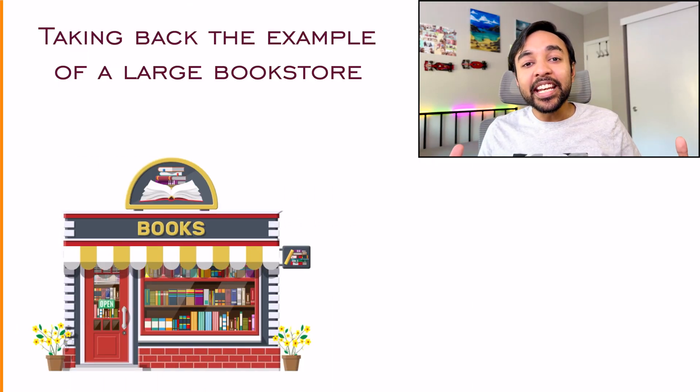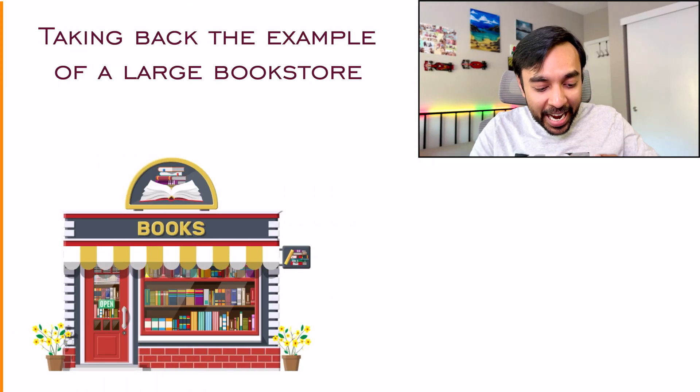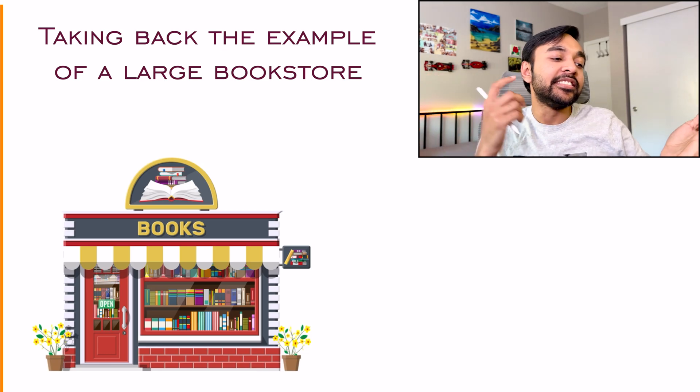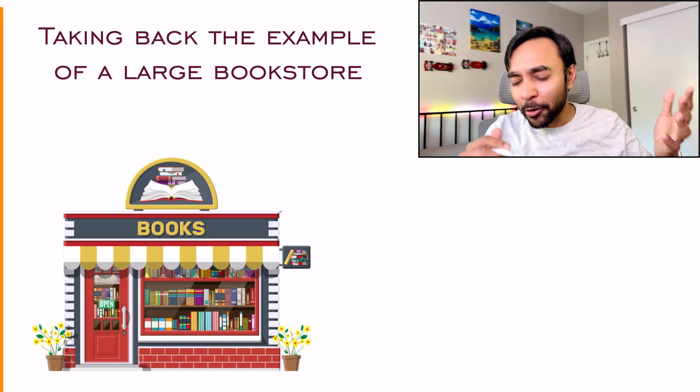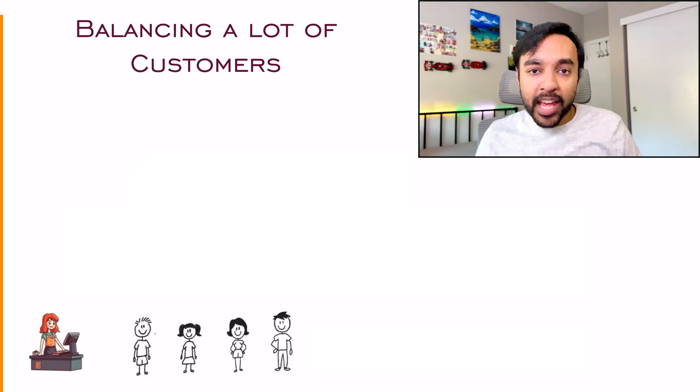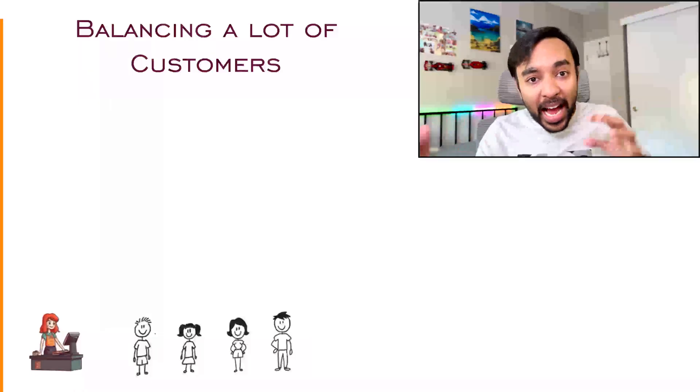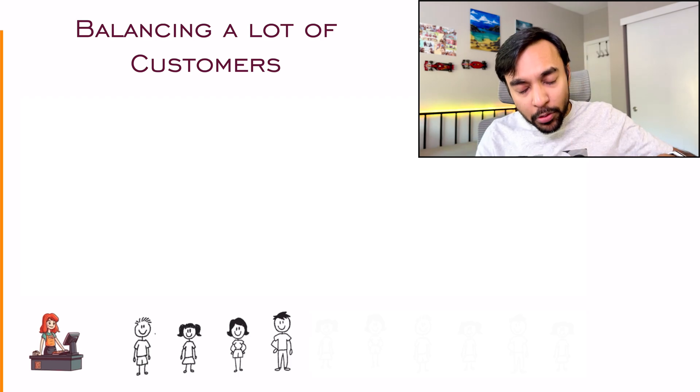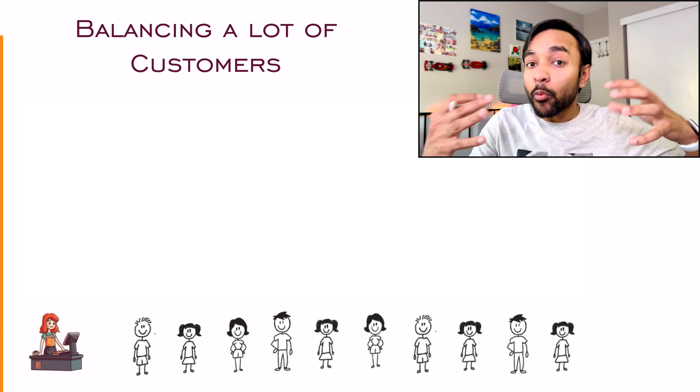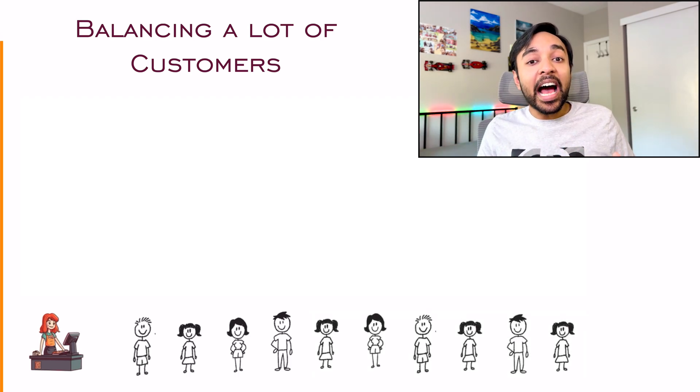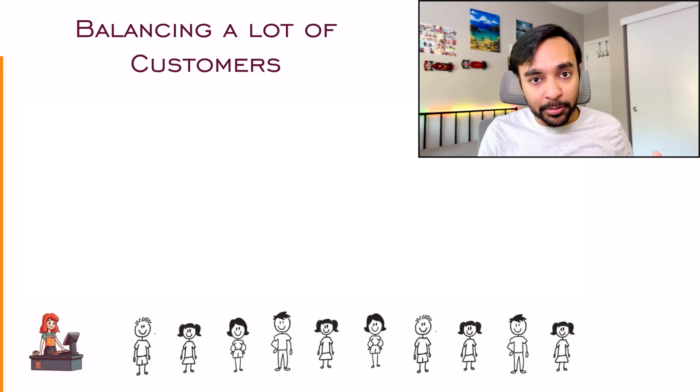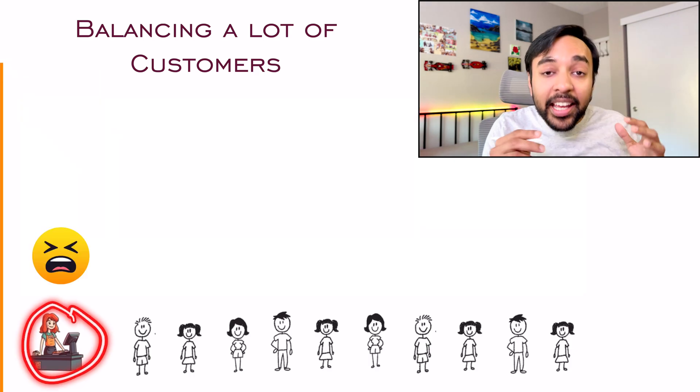So once again, let us take back the example of our bookstore and this time my bookstore is very big. It has a music library, it has digital books, it has physical books, it also has a cafe. So I will be expecting a lot of traffic in there. I had a server available and all of my clients were coming to get them serviced, right? Now since my bookstore is big, what will happen is I will have a lot more customers coming in.